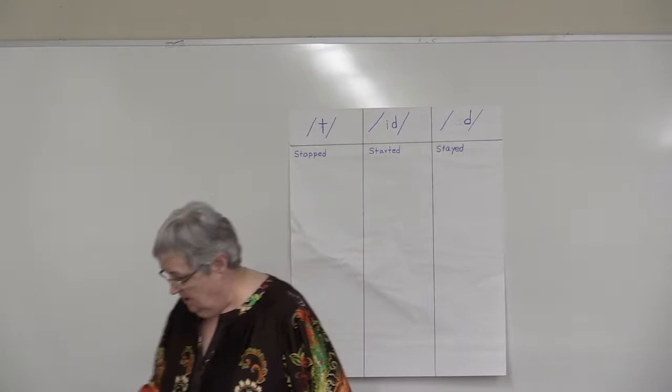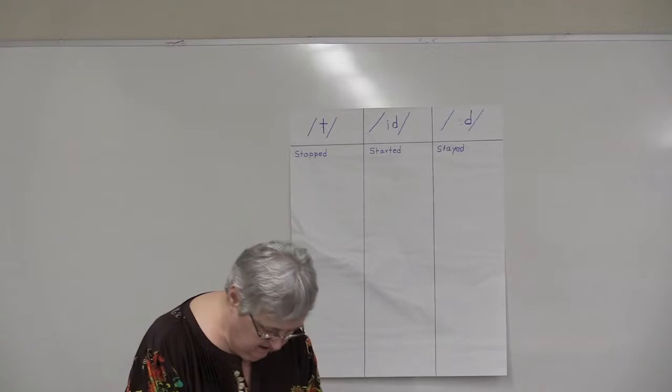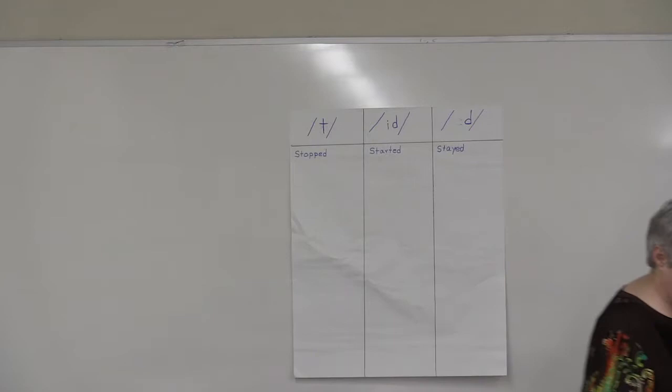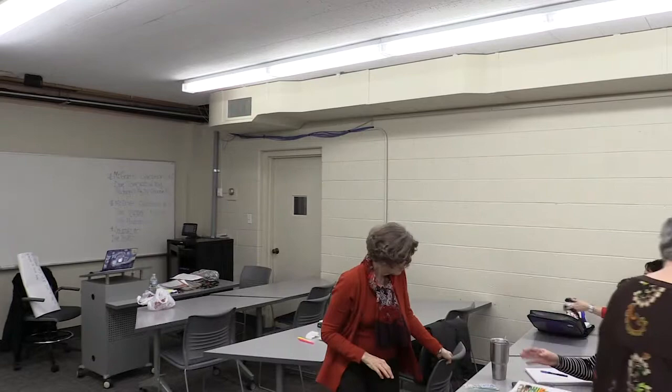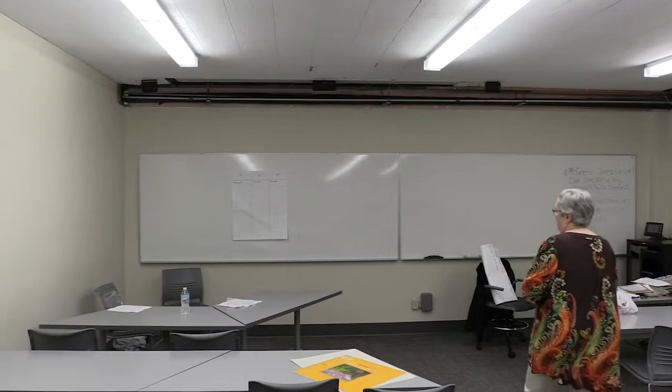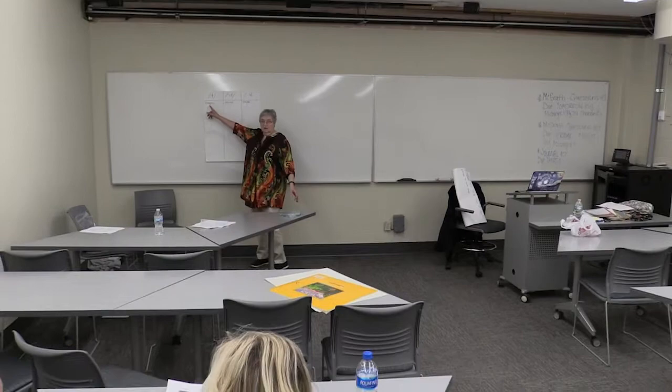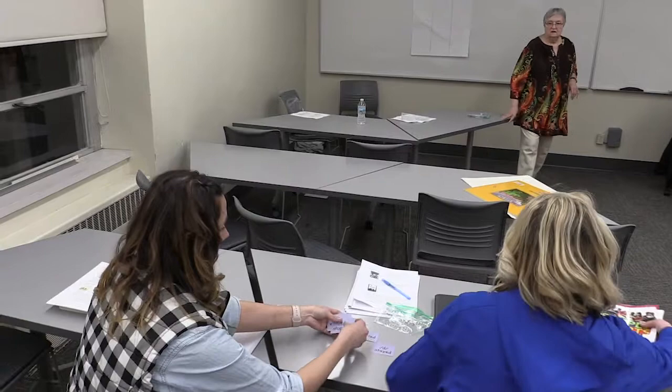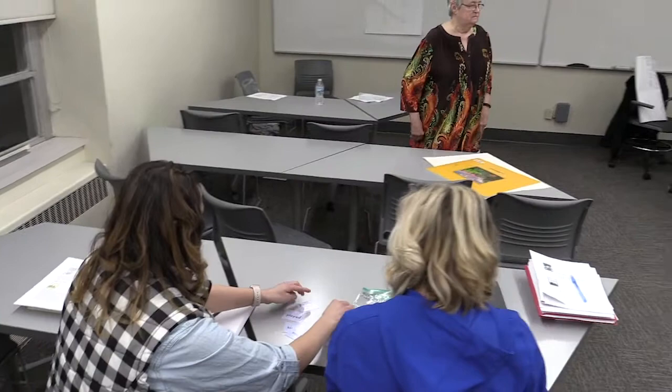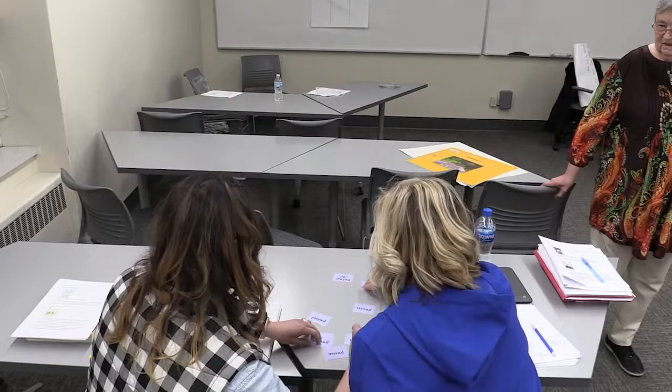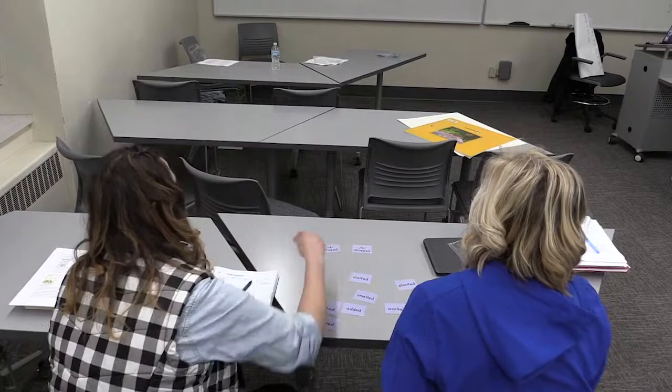But before we do that, I have some things that I'm going to have you do in groups of two, so each group gets a little envelope here. You have those same words that have the T, the ID, and the D on it. Pull those out and put them across the top of your table.